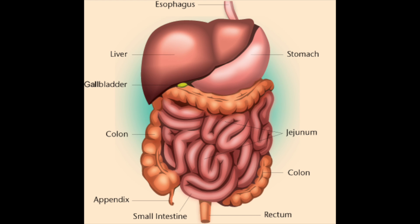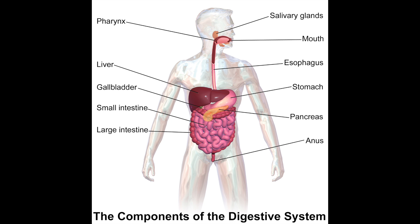Finally, we're going to look at organ systems. Organ systems are a group of organs which perform particular functions. It's helpful to think of it as: tissues are made of cells, organs are made of tissues, and organ systems are made of organs — so it's getting bigger each time.